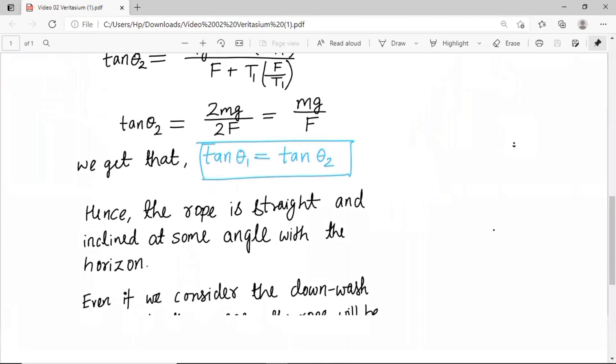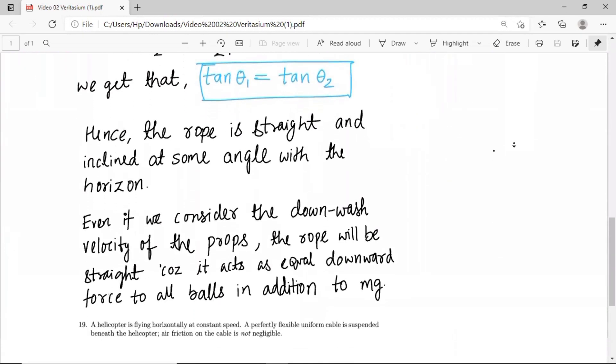Also, some people might think: what if we consider the downward draft of the propellers? Of course we can't ignore it, but the thing is that it is like a downward force acting on all the beads in addition to mg.